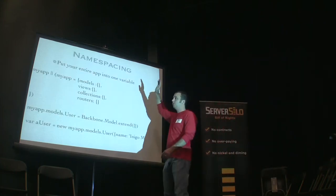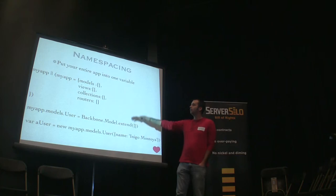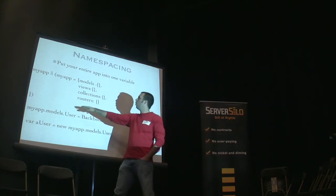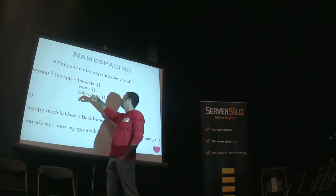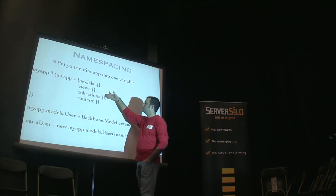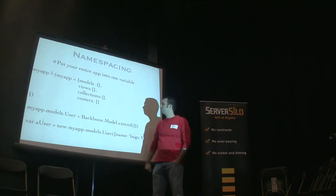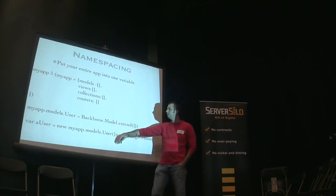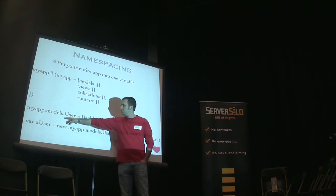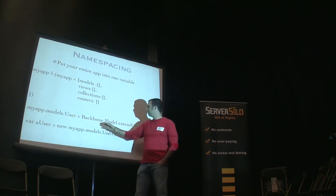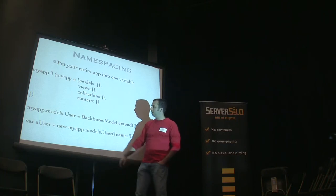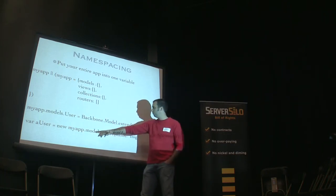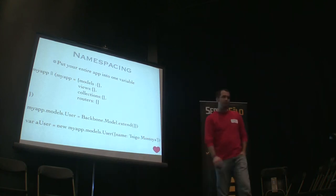We recommend you namespace your whole thing in one variable. This is how all of our apps look when we build Backbone.js apps — the whole app exists in one variable, and inside that you've got your models, views, collections, and routers. When you're defining objects, you namespace them like so — inside models I've got a user model that extends the Backbone model. And then when using that, I would say: user equals new MyApp.Models.User.